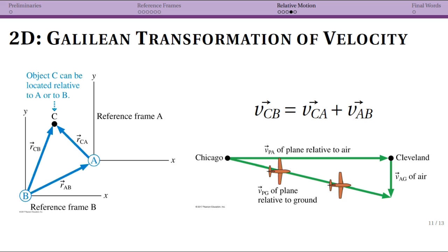Okay, so now to just generalize a little bit, we now are going to have two-dimensional vectors. Now this picture might be a little bit confusing, but we again have three objects. Notice that we're defining a reference frame with respect to A, so A stays at the origin of that reference frame.